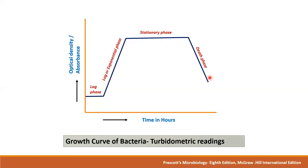From the horizontal line of the stationary phase, the next declining line indicates the fourth phase — the death phase. Cells growing in batch culture cannot remain in the stationary phase indefinitely and enter the death phase, where the number of viable cells declines due to nutrient deprivation and buildup of toxic waste products that cause irreparable harm to the cells. By plotting time in hours on the x-axis and optical density or absorbance on the y-axis, all four phases of the bacterial growth curve are revealed.